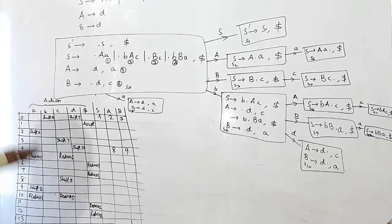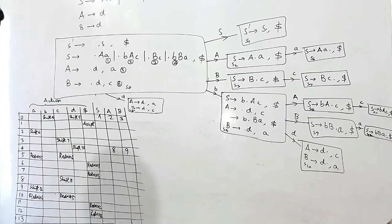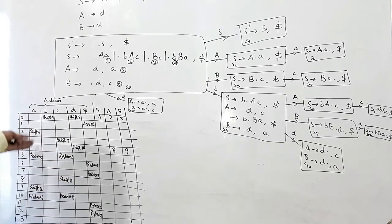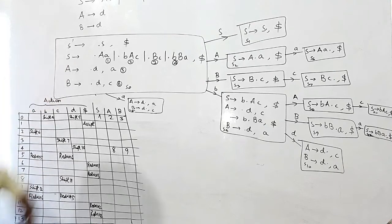So there is no conflict in this CLR1 parsing table. This grammar is still a valid CLR1 grammar.